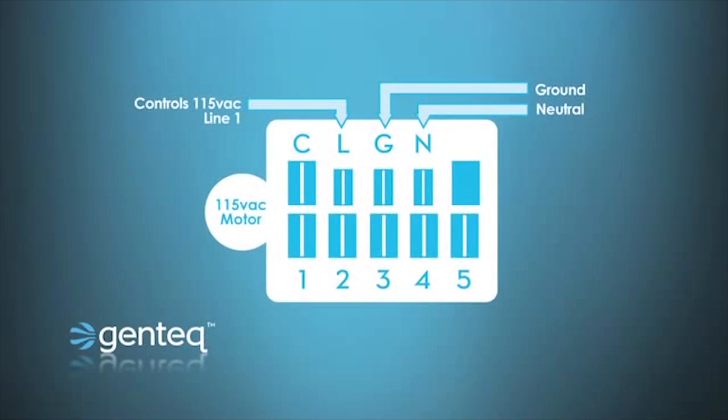On our 115 volt model, the L stands for line one, the G is ground, and the N would be neutral. On our 230 volt model, the L is still line one, G is still ground, but in this case N would be your line two.